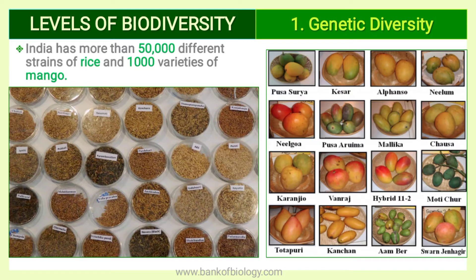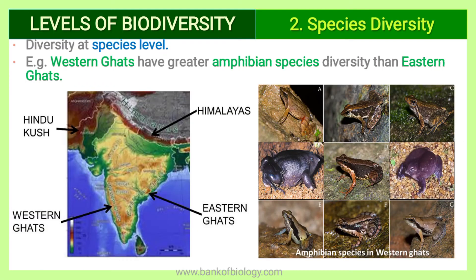India has more than 50,000 different strains of rice and 1,000 varieties of mango. These are due to genetic changes in these species. If we talk about diversity at the species level, that is called species diversity. For example, the Western Ghats have greater amphibian species diversity than the Eastern Ghats, meaning amphibians are more numerous in the west compared to the east. That is due to species diversity, where one species dominates and another does not, according to the environment or habitat.